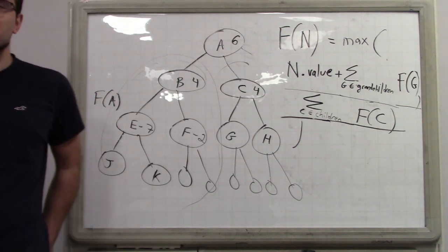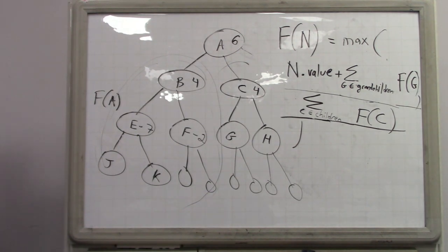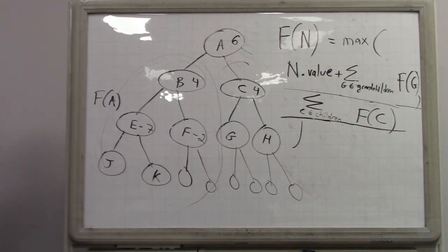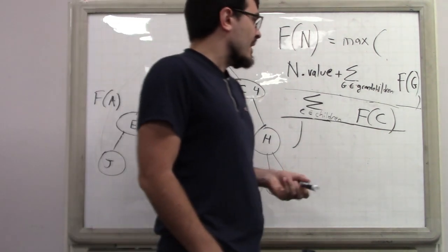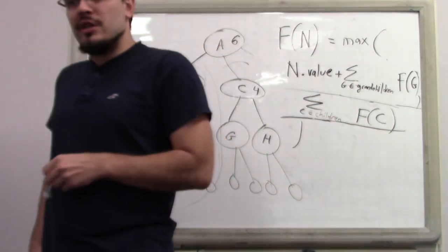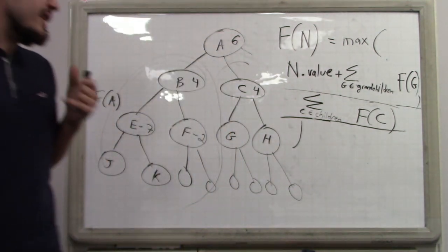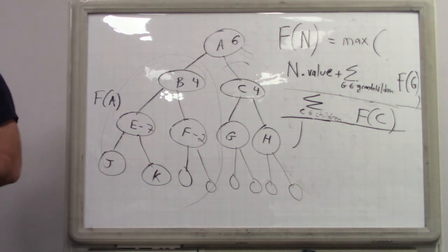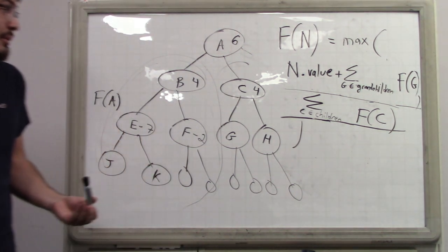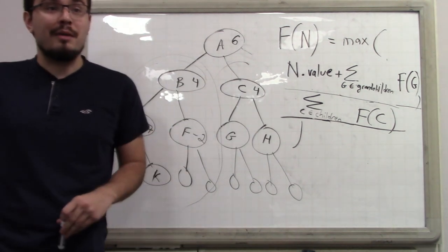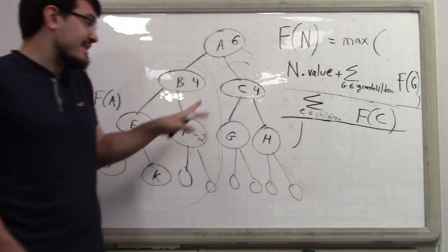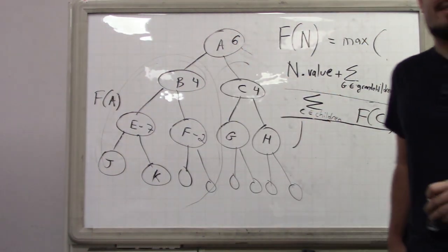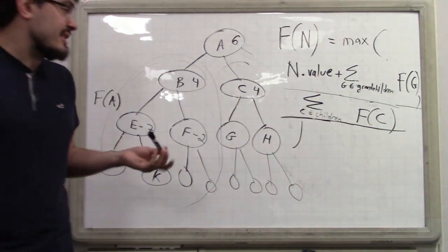Remember that in the robber problem, we showed that you need to use dynamic programming — but the robber problem is an instance of this problem. The robber problem is a special case of this. So there's no way this doesn't need dynamic programming treatment if even the special case of it — just the one where everything's linear — already needs dynamic programming, because that's just a sub-case of this. This is just a more general problem.